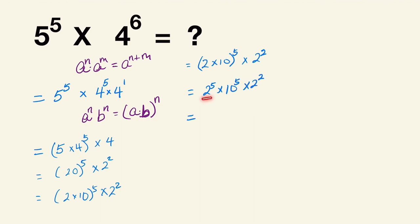Now we have 2 raised to the 5 and 2 raised to the 2. We have the same base with different exponents. We can add the exponents together, and this is the exponent rule that we're using. It becomes 2 raised to the 7 times 10 raised to the 5.